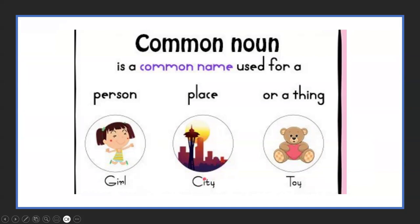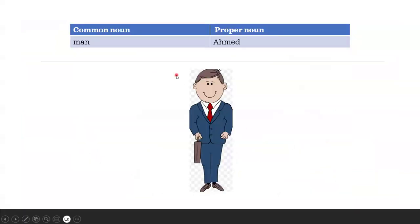This toy — toy is a common name, but Teddy Bear is a proper noun. Also, when I say man, this is the common noun. Man is a general common noun.